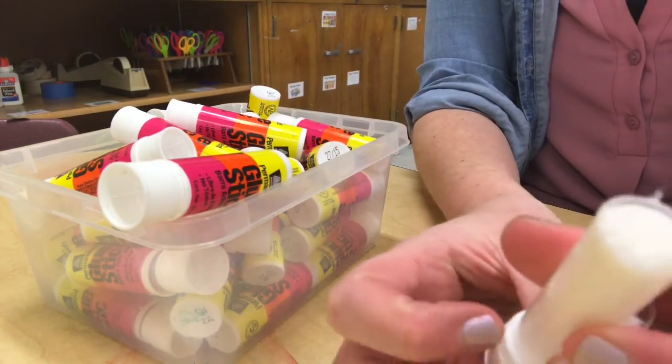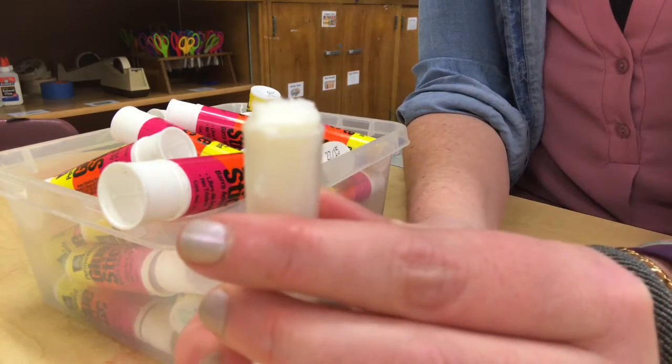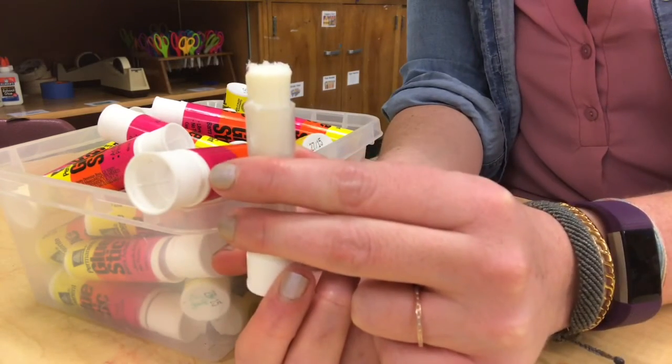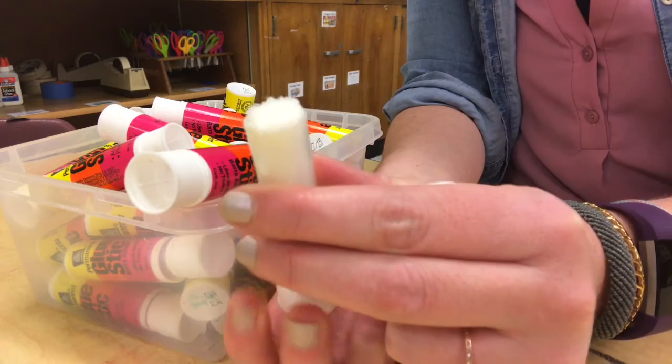This one has been used before but it's got plenty of glue left. It just looks a little messy. You can definitely still roll it up but not too far. If you do it this far you'll use too much glue, it'll break and you'll have a hard time getting it back down.